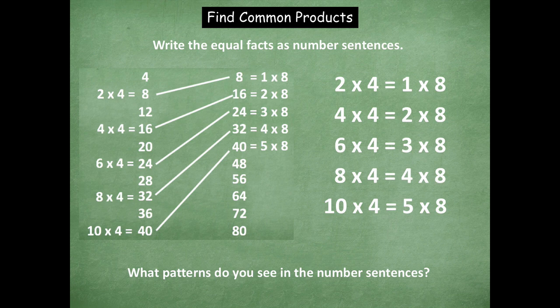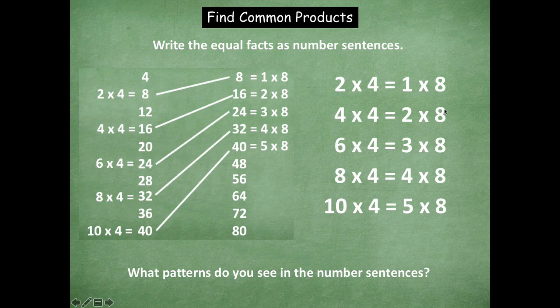Now we come to this question at the bottom: what patterns do you see in the number sentences? Pause the video and look at these number sentences. What do you notice? Look at just the first one — two times four equals one times eight. What do you notice about those factors and how they're changing from the left side to the right side? Take a minute to look, then click play when you want to share and talk about some together.